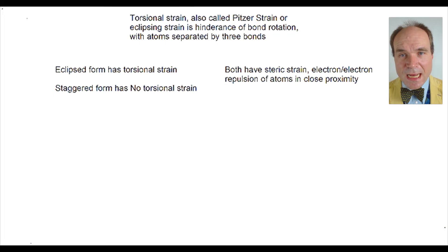Both the eclipsed and the staggered forms have steric strain. This is where on separate atoms we have electron-electron repulsion due to their close proximity, or potentially even they could be in the same location if it wasn't for that repulsion.